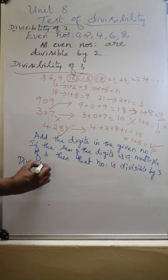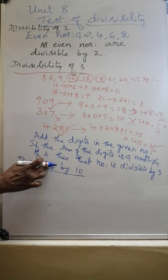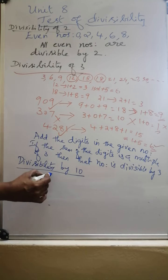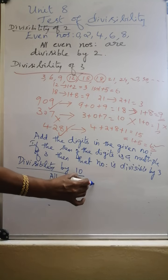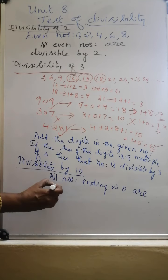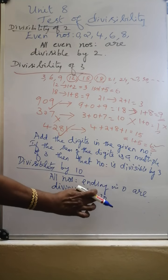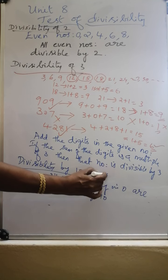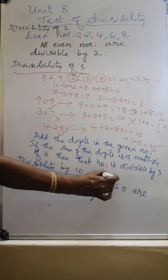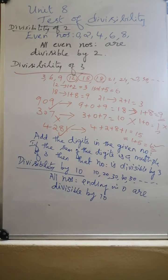Now next is divisibility by 10. All the numbers ending in 0 are divisible by 10. Because in the 10 times table, the numbers are 10, 20, 30, 40, 50, etc. So all the numbers ending in 0 are divisible by 10.